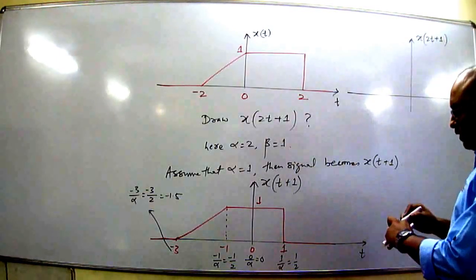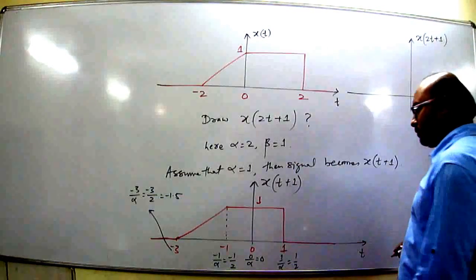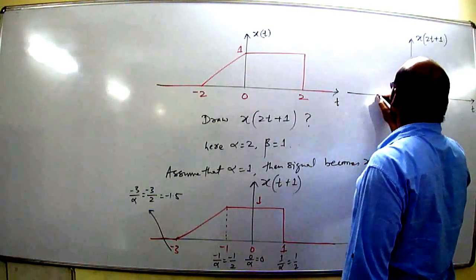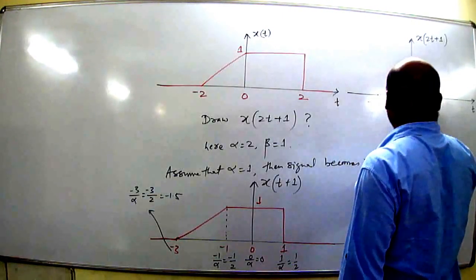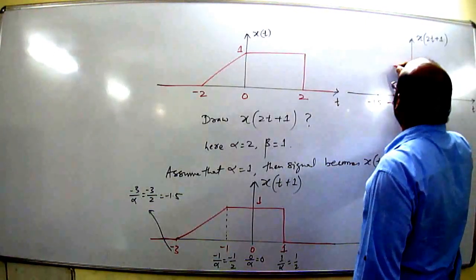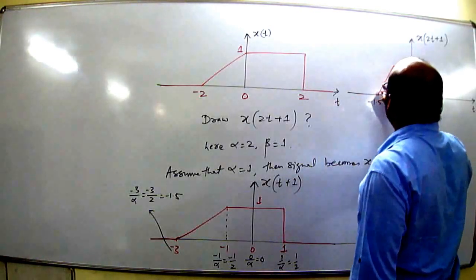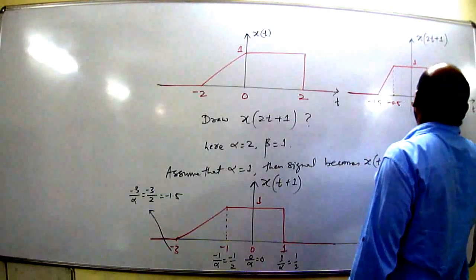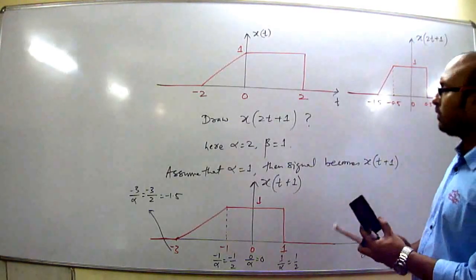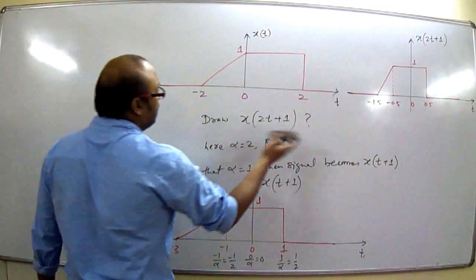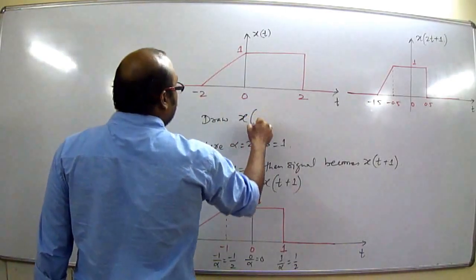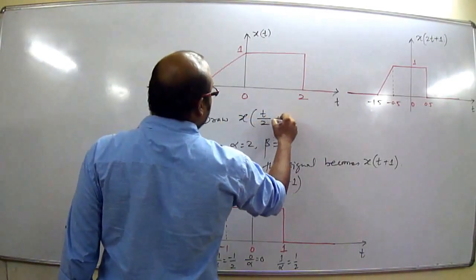Now x(2t + 1) has time axis values at −1.5, −0.5, 0, and +0.5. This is x(2t + 1). Now let us draw another signal — x(t) is the same, let us draw x(t/2 + 1).